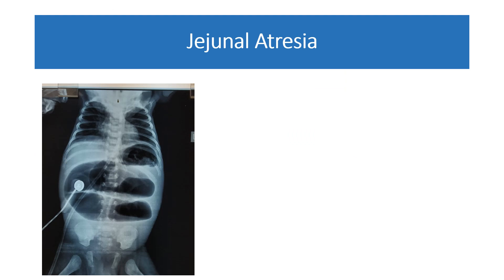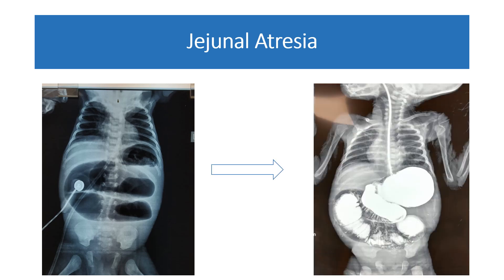For confirmation of jejunal atresia, we can perform a barium meal. In this barium meal, you can see the barium in the nasogastric feeding tube, the stomach, the duodenum, and the jejunum — but beyond this, there is no barium flow visible. The diagnosis is jejunal atresia.